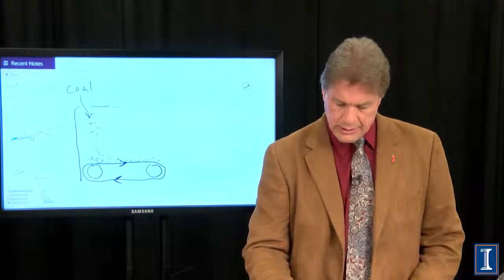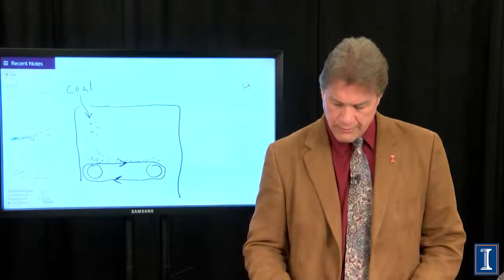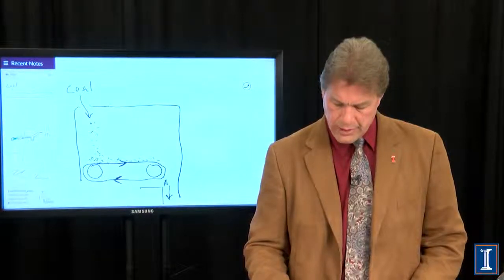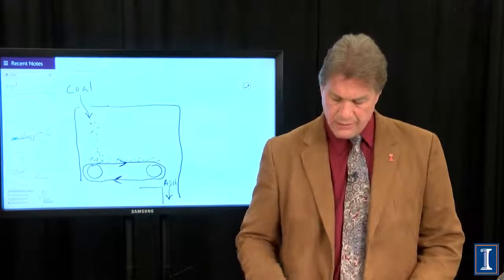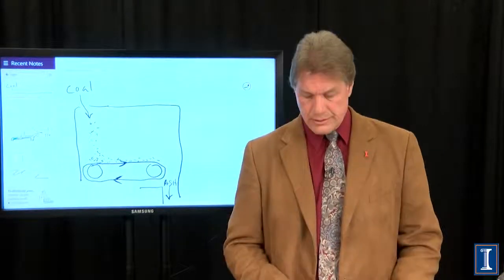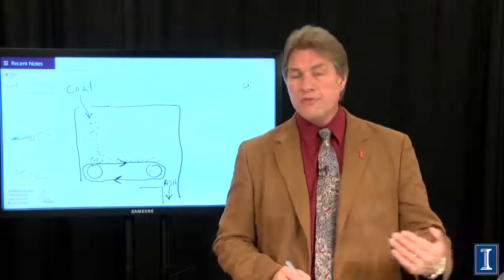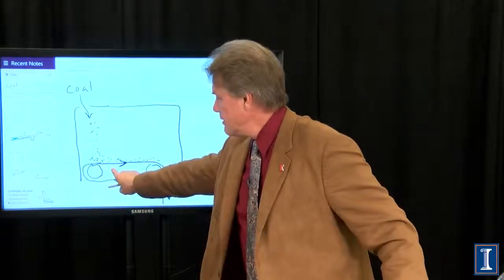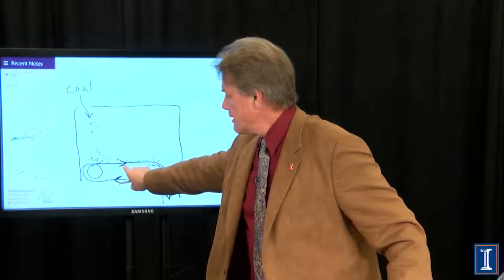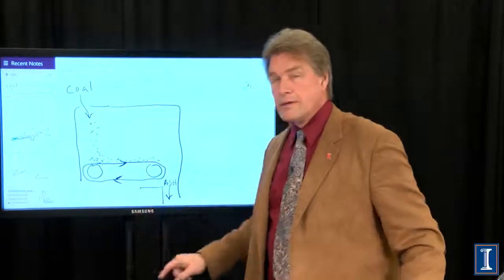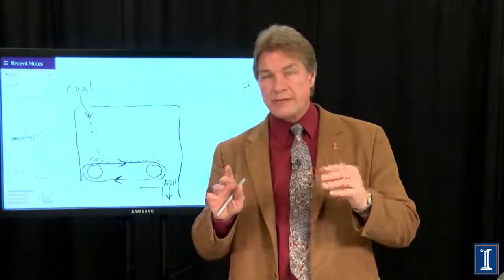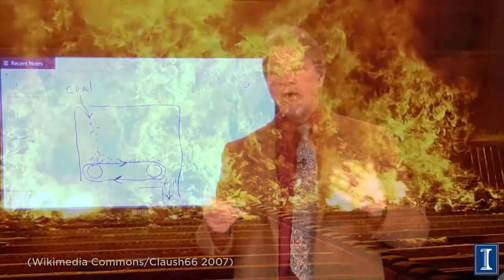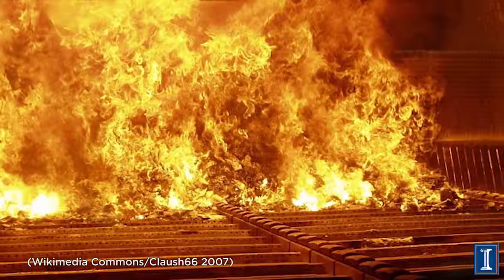The beauty of this system is that we have a gap here. And this gap allows the burnt coal, the ash, to fall off the end of the moving grate. And you time the movement of the grate. It's slow. But it's timed just right. So the amount of coal you're adding, by the time the coal gets to here, all of the energy content, ideally, has been spent.